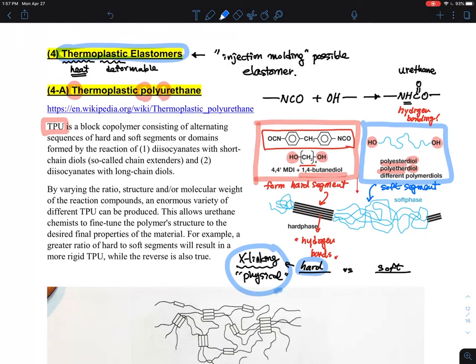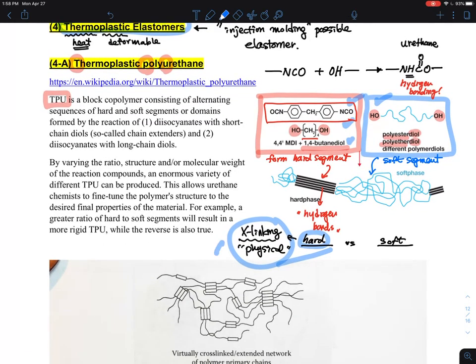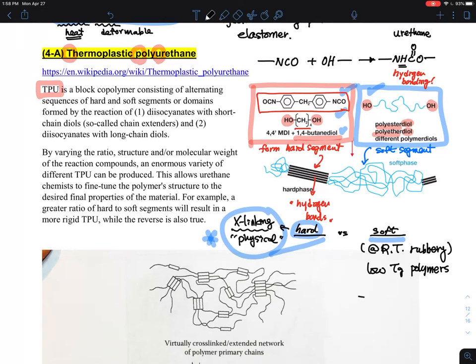Polyurethane achieves this by diisocyanate with very short diol. When you have diisocyanate with a long flexible diol, they form this very amorphous rubbery surface. This makes these things more cross-linked in nature. Rubbery means typically at room temperature, so we're talking about polymers with low Tg—polyester or polyether.